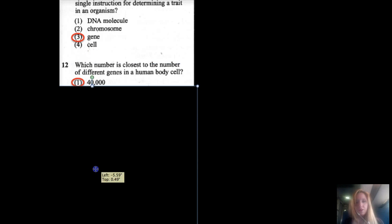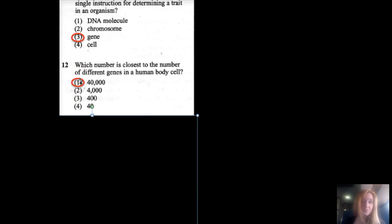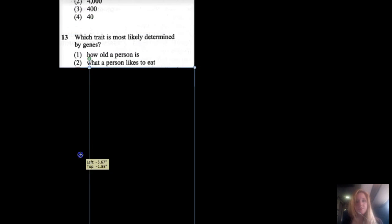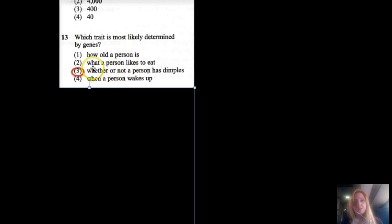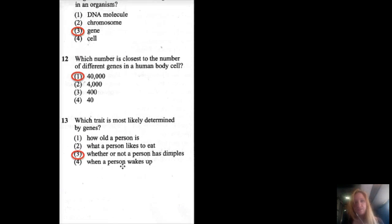Number twelve: Which number is closest to the number of different genes in a human body cell? It is the largest one: 400,000 genes. Number thirteen: Which trait is most likely determined by genes? How old a person is—definitely not genetic. What a person likes to eat—no, that's usually by experience. Whether or not a person has dimples—those are those little indents in people's cheeks, I wish, they're really cute—or when a person wakes up. It's whether or not a person has dimples.